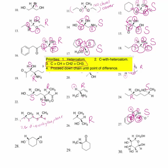Number twenty-eight: OH is number one, H is number four. Looking at both sides — CH2, CH2, CH2 on one side, and then a CH with a heteroatom on the other. The right side is going to be number two priority, and the left side is going to be number three priority. I am rotating clockwise, but H is coming out towards me. So that makes this asymmetric center an S.